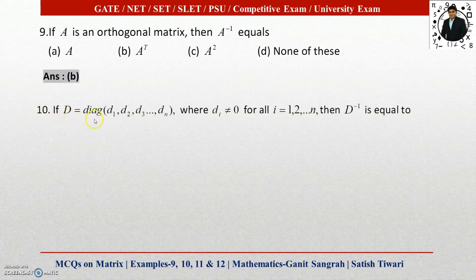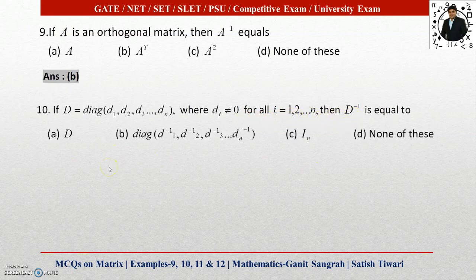Next question: If D equals the diagonal matrix diag(D1, D2, D3, ..., Dn) where Di is not equal to 0 for all i from 1 to n — meaning the diagonal entries are non-zero and all non-diagonal entries are 0 — then what is D inverse? Four options are given. Option B is correct. For a diagonal matrix, to find the inverse we simply take the reciprocal of each diagonal element, giving us the inverse of the given diagonal matrix.